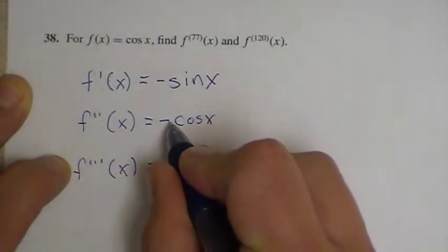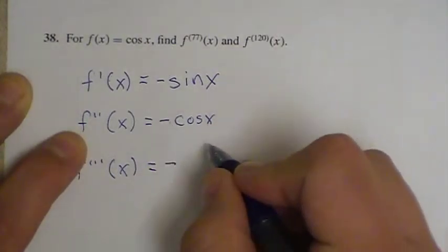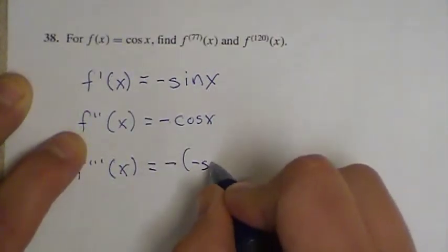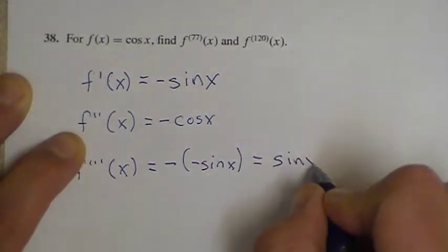But I have a negative in the previous derivative, so I'm just going to copy that negative down. And then the derivative of cosine would be negative sine, and then that would simplify to positive sine of x.